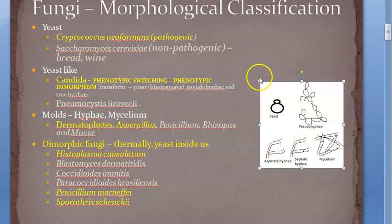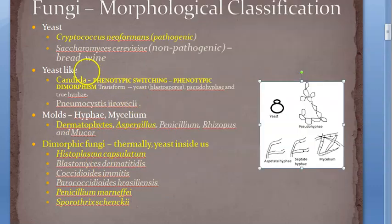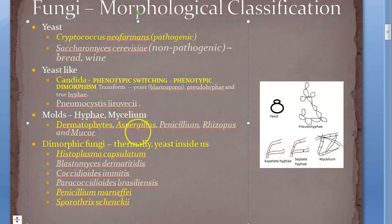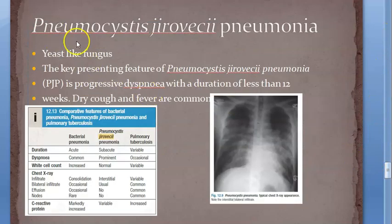In yeast you have buds, and in molds you have hyphae, mycelium, and all that. Pneumocystis jirovecii is neither here nor there - that is what makes it yeast-like. In Candida also you have yeast-like transformation. Let's come back to Pneumocystis jirovecii.